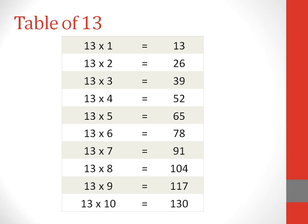Table of 13. 13 ones are 13. 13 twos are 26. 13 threes are 39. 13 fours are 52. 13 fives are 65.